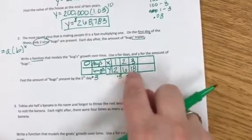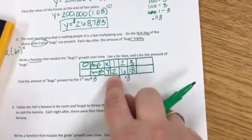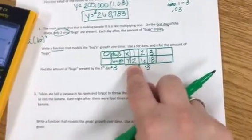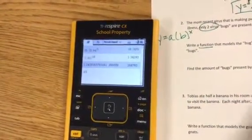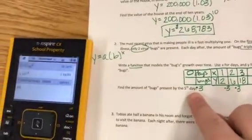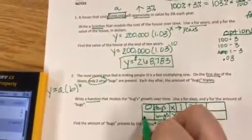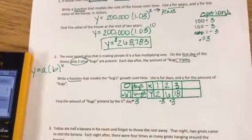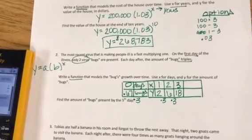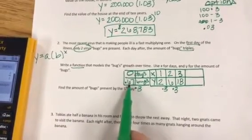Which means if on day one I have two bugs, I need to take two and divide it by three to continue with my pattern, which is going to give me 0.67. I'm just going to round it to the nearest hundredth. Okay, so that gives me 0.67. That is going to tell me my initial amount of bugs that I started with.